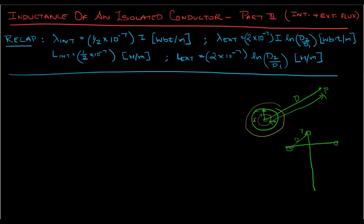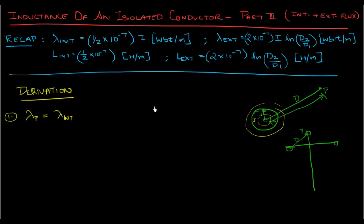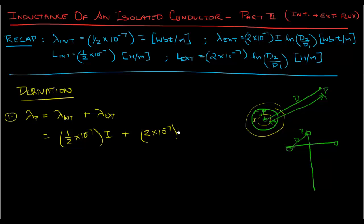Let's get into the derivation. This one is going to be very straightforward with a small mathematical manipulation in between. Step one: our flux linkage at point P is going to be due to the internal flux linkage of this conductor plus the external flux linkages. So that's going to be 1/2 times 10 to the power minus 7 times i, plus 2 times 10 to the power minus 7 times i times ln of d2 over d1.